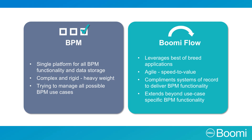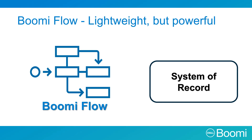Traditional BPM is better known as a single platform to deliver all aspects of BPM functionality and data storage. It is complex and rigid — said to be heavyweight — and trying to manage all possible BPM use cases can be difficult. Boomy Flow, on the other hand, is able to connect and leverage your best-of-breed applications. It is very agile, which means a tremendous speed-to-value outcome for your business. Flow delivers BPM functionality by complementing a system of record and is able to extend far beyond use-case-specific BPM functionality.